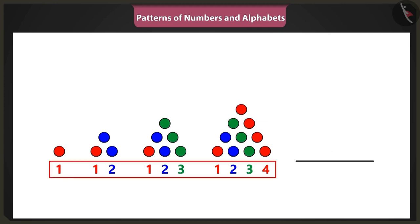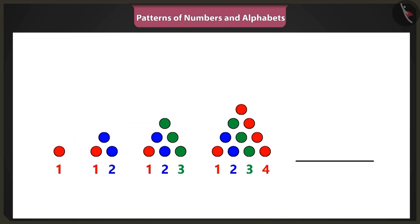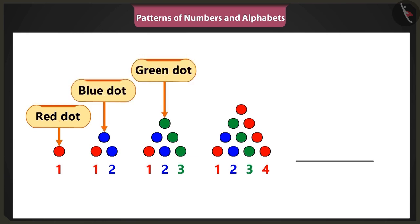Here in this pattern, dots are placed in increasing order to form a triangle. And yes, in this pattern, the blue dots are behind the red dots and then you have the green dots and they are repeated in specific order.